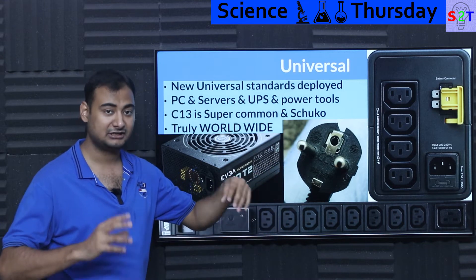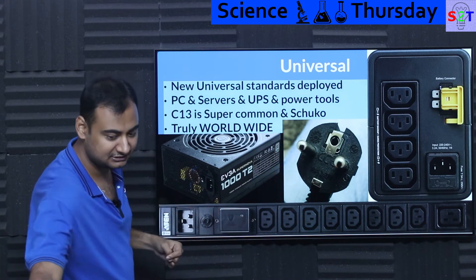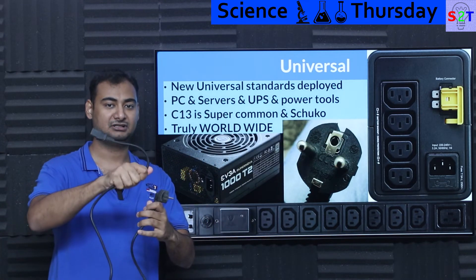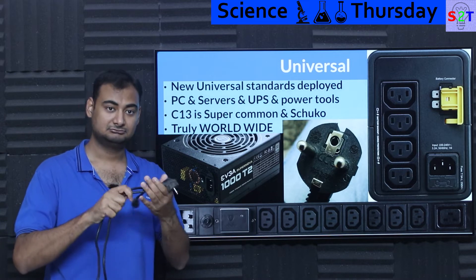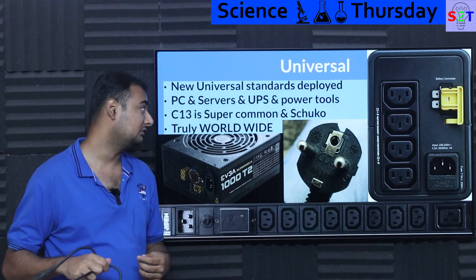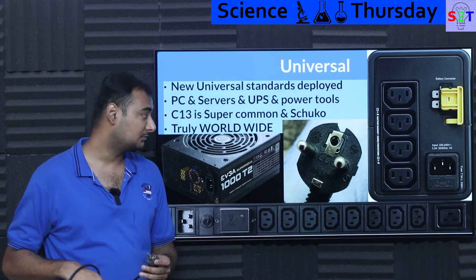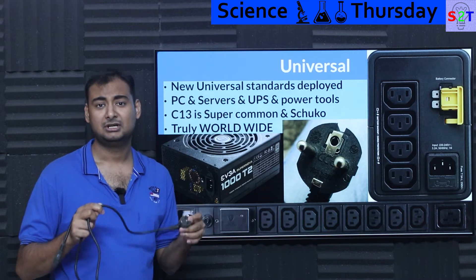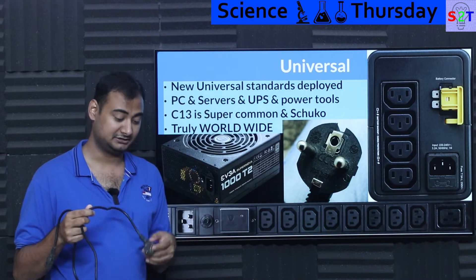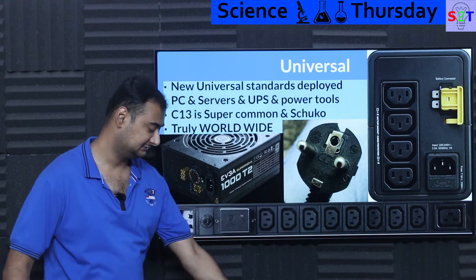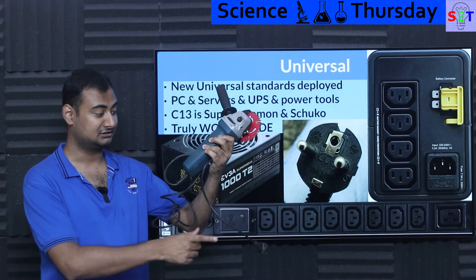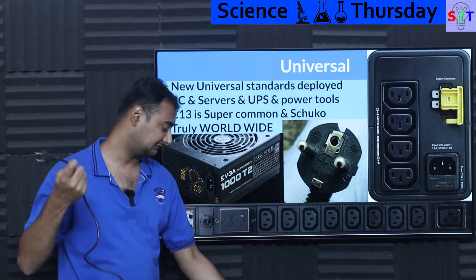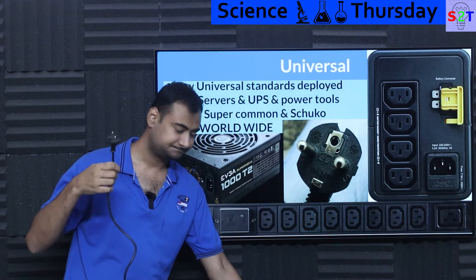C13 has become the electronic industry standard. On the AC side, the world is slowly moving toward the Schuko plug. The Schuko plug is sold in India as well, though grounding won't work there — it's acceptable for laptop plugs and appliances like a Bosch angle grinder that has no metal chassis and therefore doesn't require grounding. Generally, you'll get a cable with an electrical plug on one end and C13 on the other end.